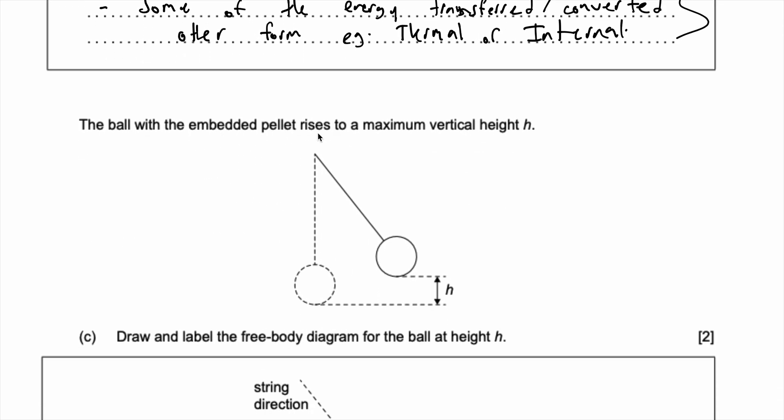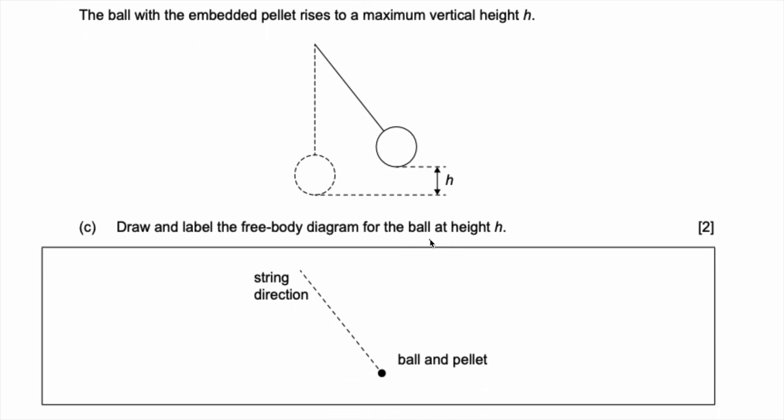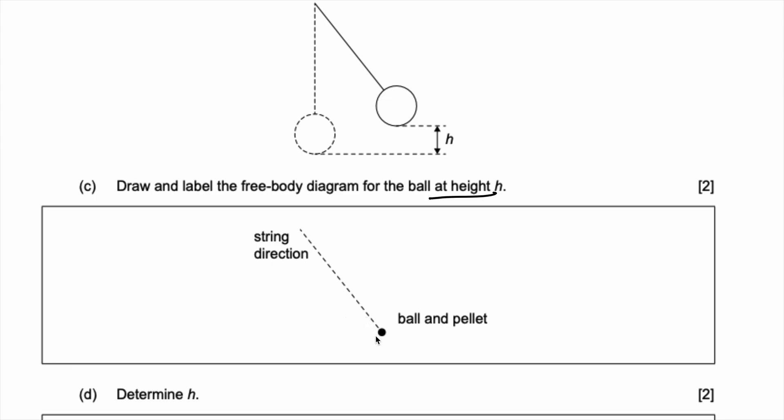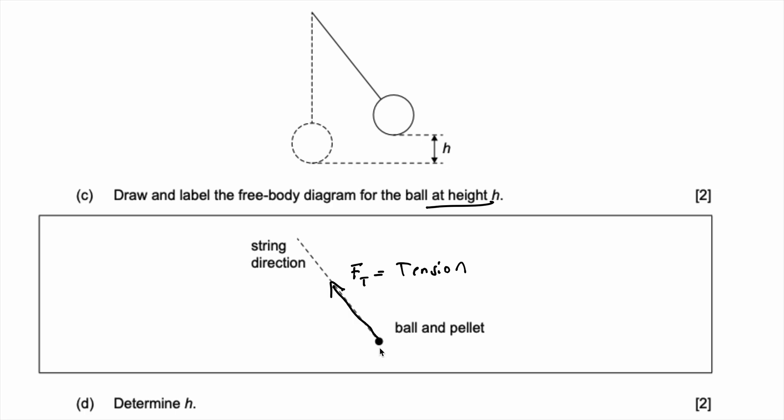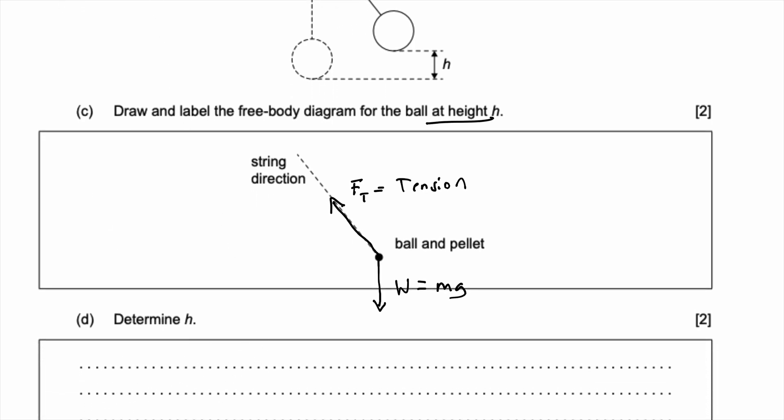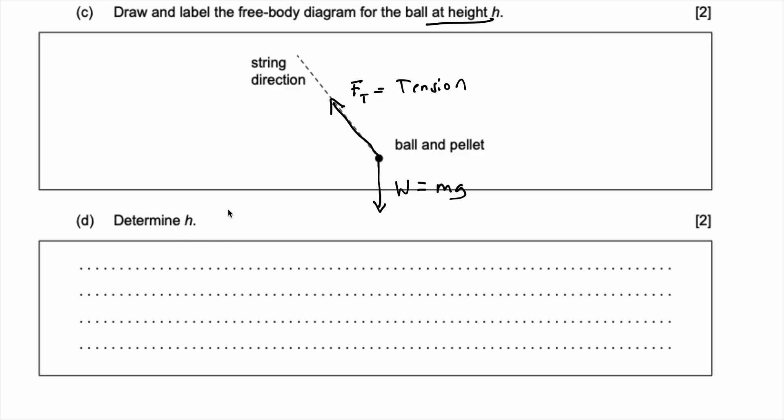So the ball with the embedded pellet rises to maximum vertical height h. Draw and label the free body diagram for the ball at height h. So firstly we know there is a tension due to the string because the tension force is holding the ball, and we also attach this string, so we can label that as F_T or that's just tension force. And we also know that there is a weight component of the system. So the weight component is basically just weight is equal to mg. And now these are your two main forces for this free body diagram.